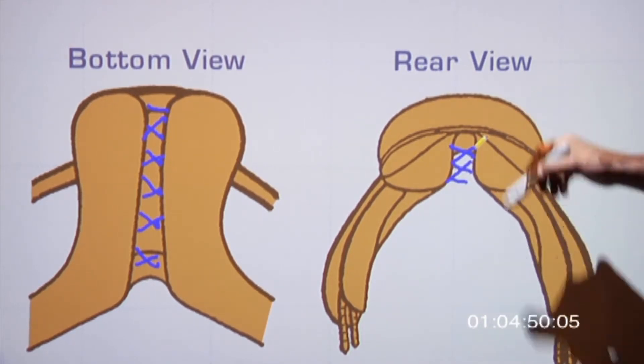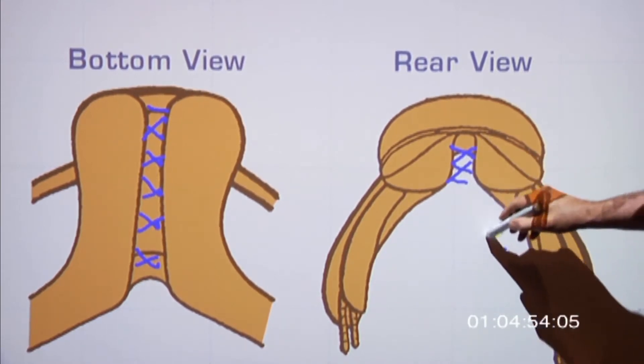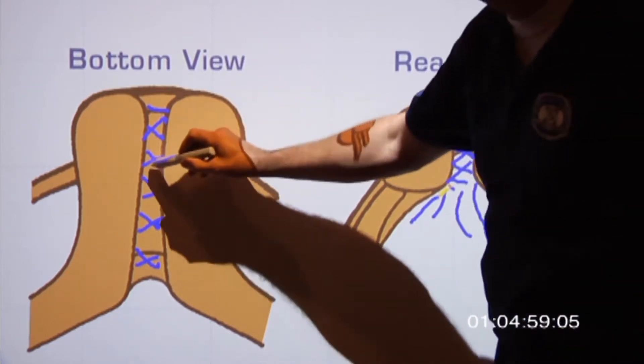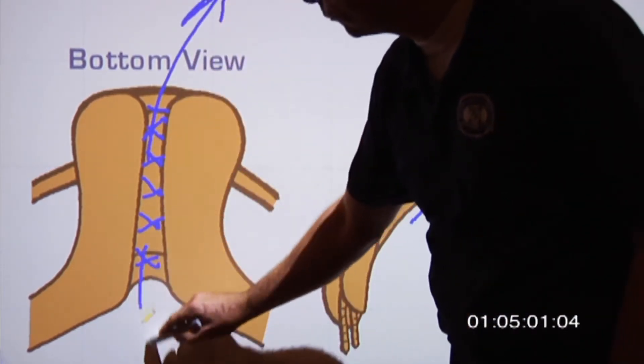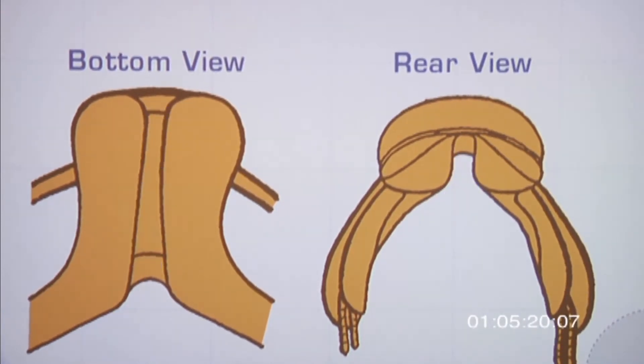Number one, when we ride a horse there's friction, there's weight, and heat wants to rise. When heat rises it can dissipate to the back or to the front of your saddle, so it's definitely for circulation.